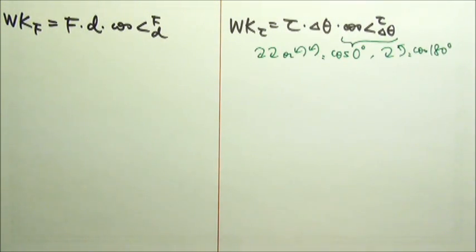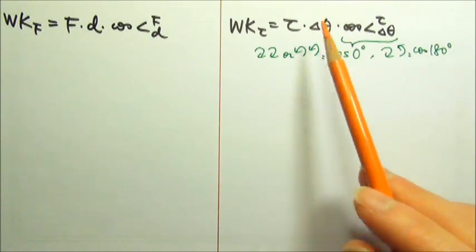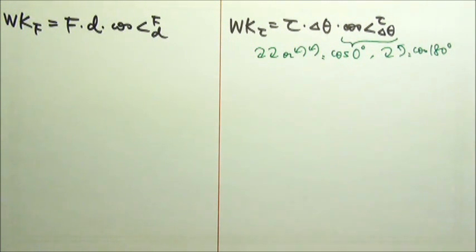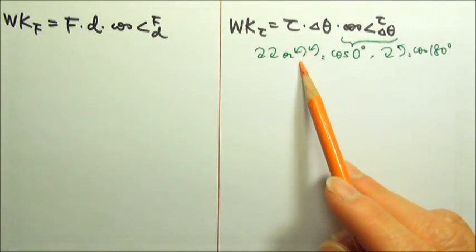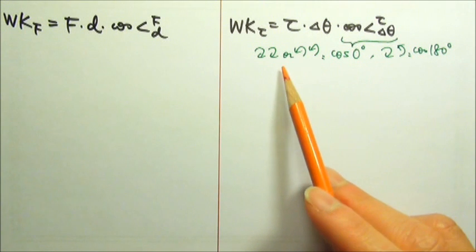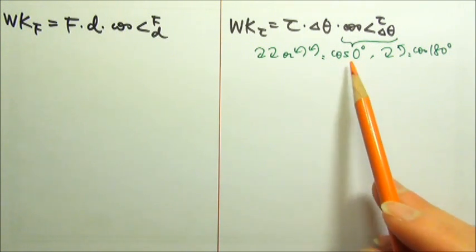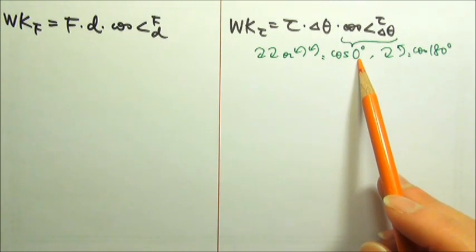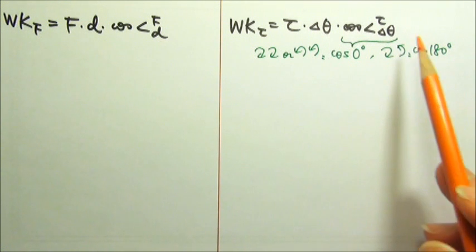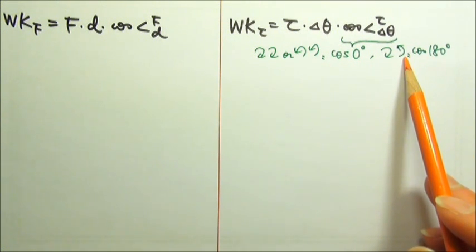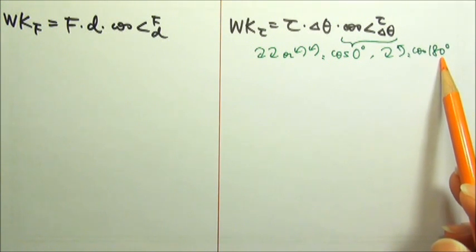In this course, we usually just deal with torque and rotation that are either clockwise or counterclockwise. So if those two are both clockwise or both counterclockwise, they're in the same direction, we would have cosine zero degrees. If those two are one clockwise, one counterclockwise, opposite directions, then we would have cosine 180.